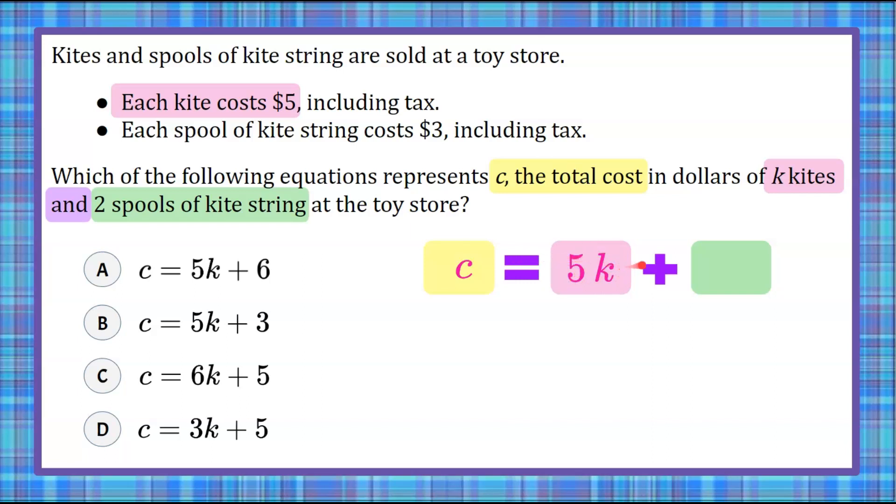But when we're at the counter paying, we're also purchasing two spools of kite string. We're told that each spool costs $3, and we're going to buy two.